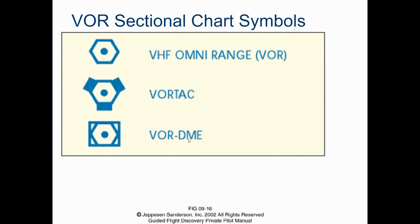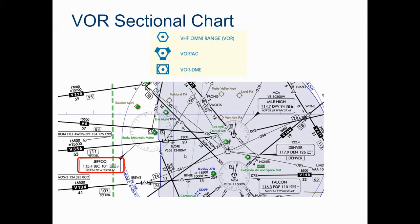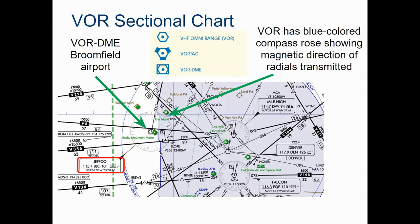On charts you'll commonly see these little hexagon symbols. One with a box around it includes Distance Measuring Equipment. This is a VOR sectional chart from SkyVector - this one shows the Broomfield Airport, Rocky Mountain Metro, and its VOR radio signal station is 115.4, with call sign BJC. If you tune your VOR radio to the Broomfield airport, you would tune it to 115.4. You can see a compass surrounding it showing magnetic direction.